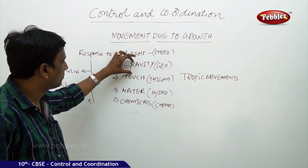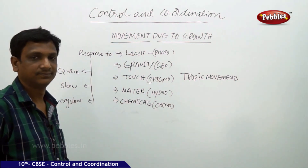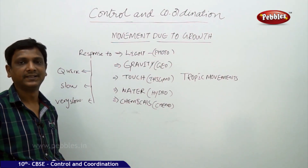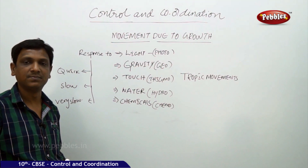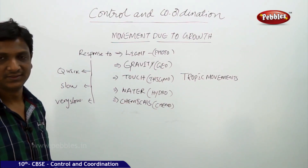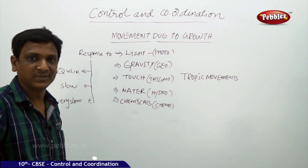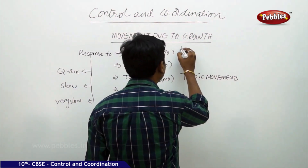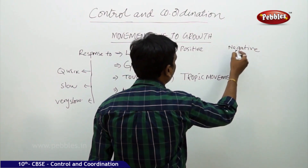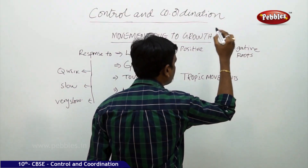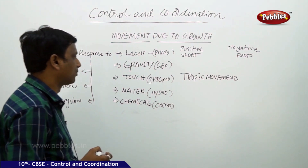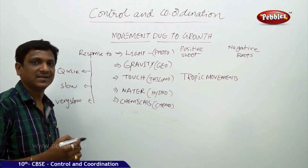Plants respond to light, gravity, touch, water, and chemicals. The response to light is called phototropism. The shoot always grows towards sunlight because of some chemical compound present in its tip. The roots, however, grow away from sunlight. So phototropism is of two kinds — positive and negative. Roots show negative phototropism, moving away from the Sun, while the shoot shows positive phototropism, growing towards the Sun.